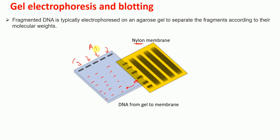So for Delta adRNAs1, the intended fragment — the one we want to detect using probes — is the 8.9 kb band. For Delta adRNAs2, the two intended fragments are the ones we want to identify during detection. In summary, we ran the digested DNA on the gel and then transferred the fragmented DNA onto the nylon membrane.